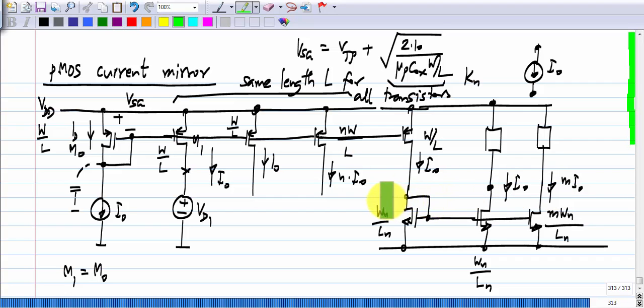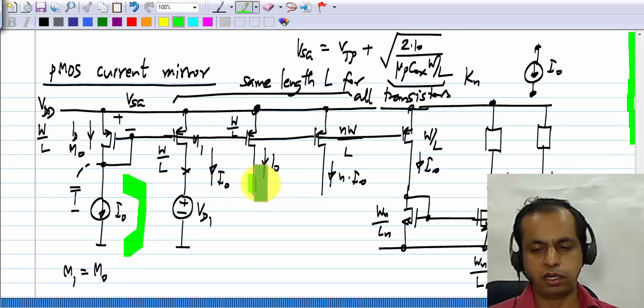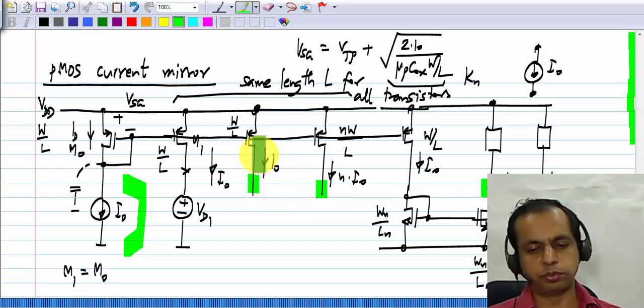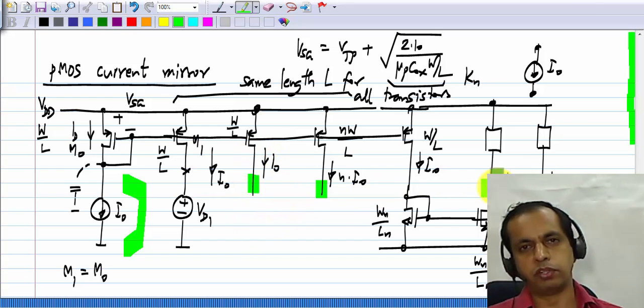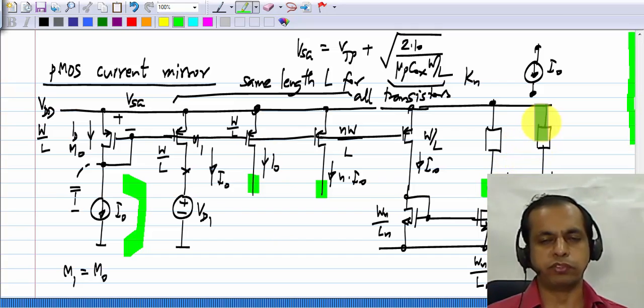So, if you want a current being pushed into some node, then you use this type of PMOS current source. If you want current pulled out of some node, you use this type of NMOS current source. So, this is part of every chip, and if you start with a single current source I naught, you can get a number of current sources of both polarities, of both pushing in and pulling out. If you want to be very precise about it, this is called a current source, because it sources current into a node, and NMOS stuff is called a current sink, because it sinks current from a node, but it is quite all right to call both of them current sources.